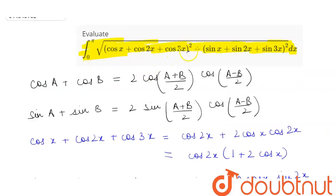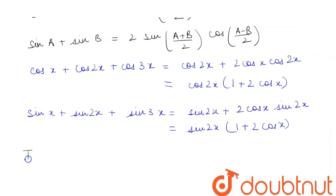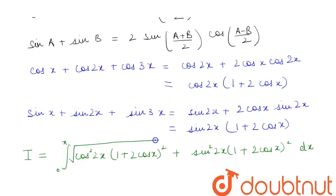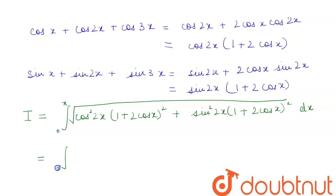Putting the values back into the integral, we are squaring both expressions. So I equals integration from 0 to π of the square root of cos²2x·(1 + 2cosx)² + sin²2x·(1 + 2cosx)² dx. This equals integration from 0 to π of the square root of (1 + 2cosx)² times (sin²2x + cos²2x) dx.